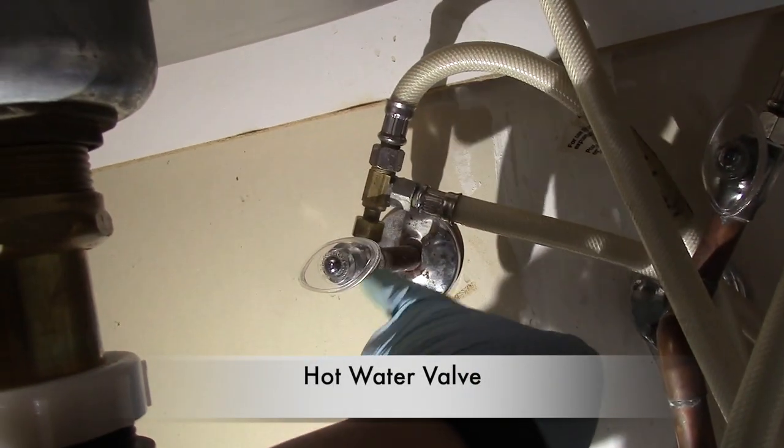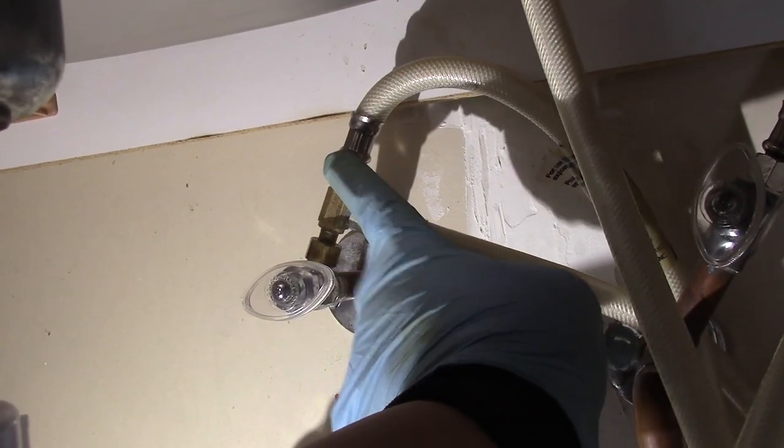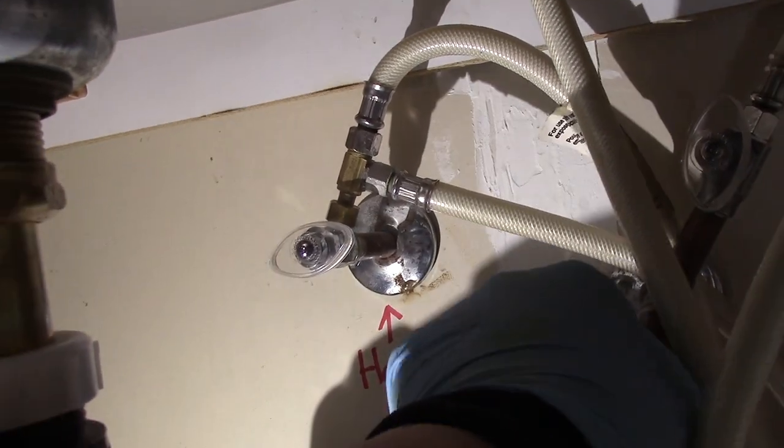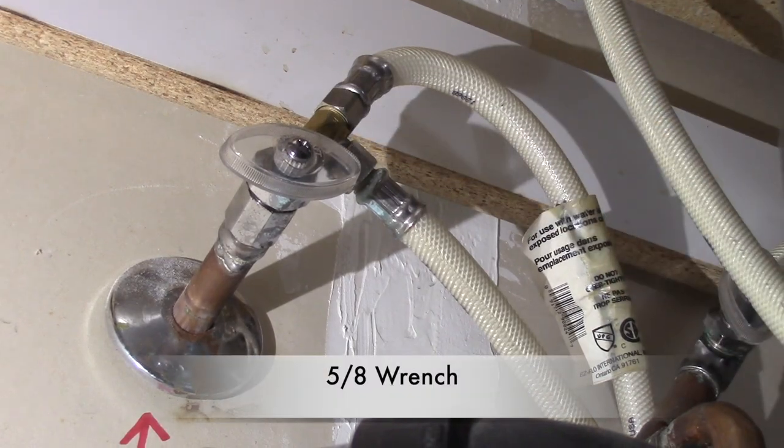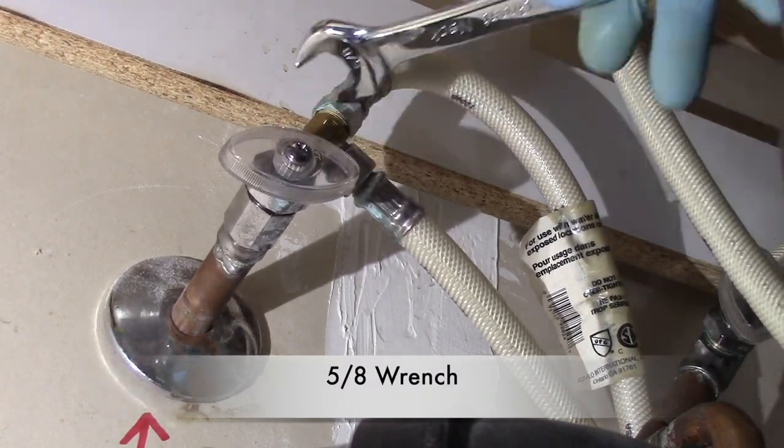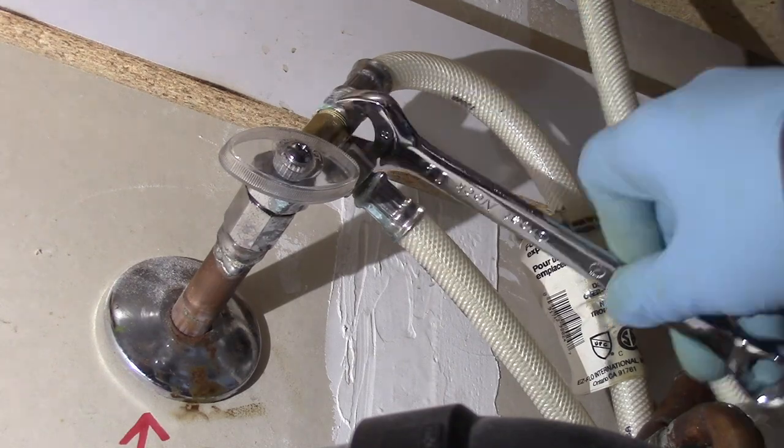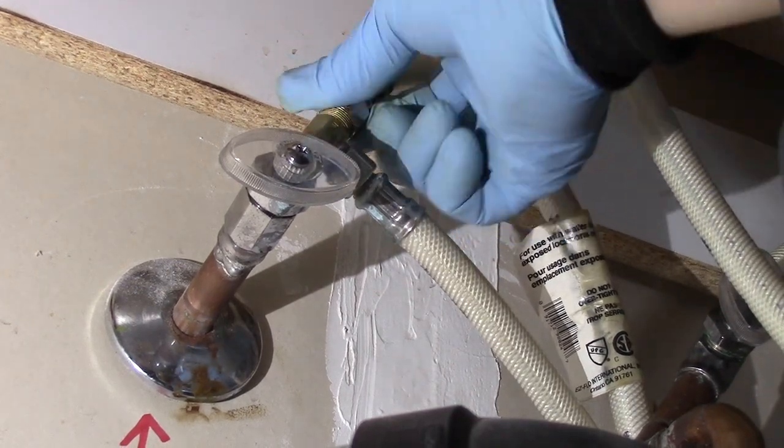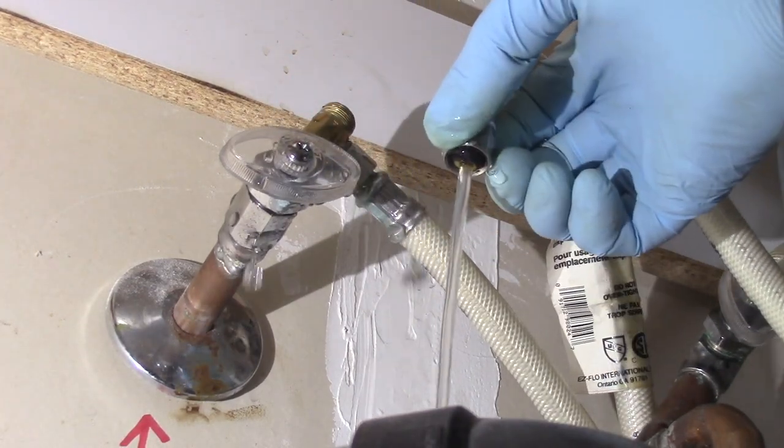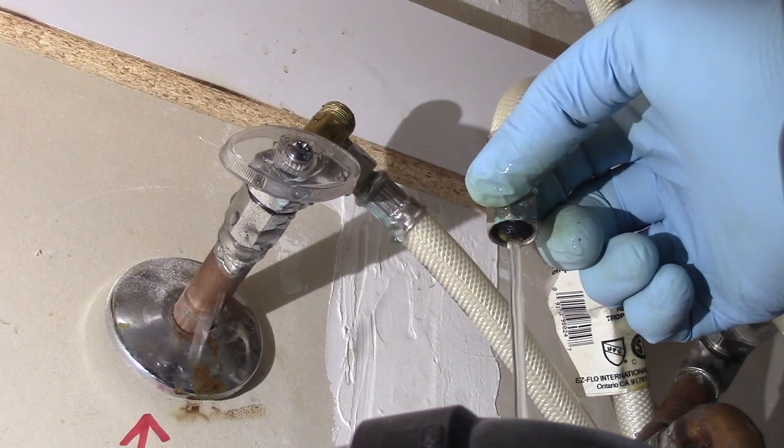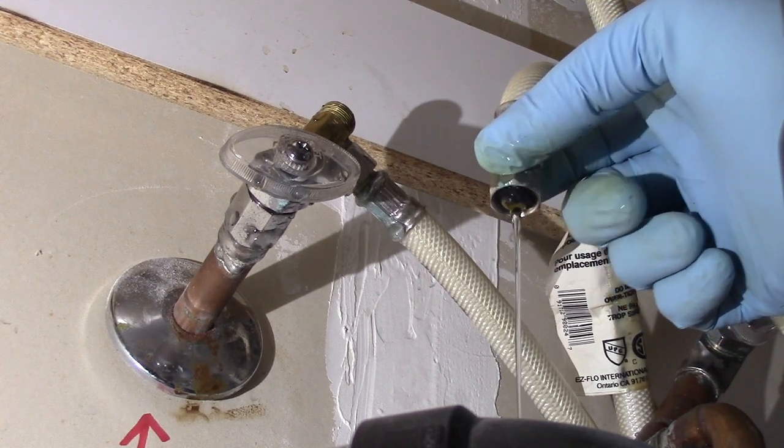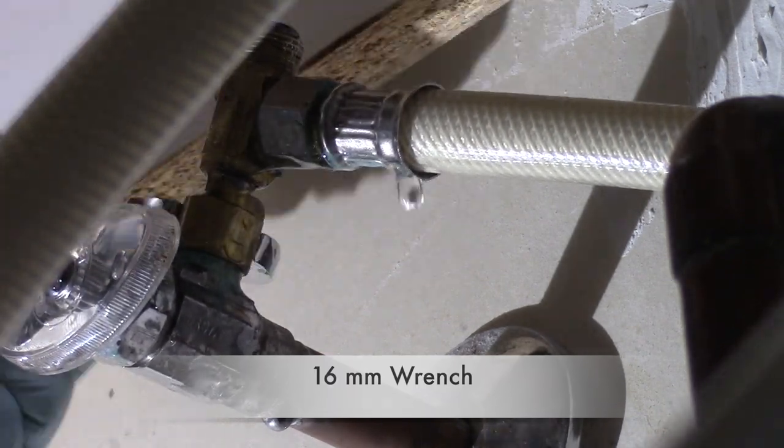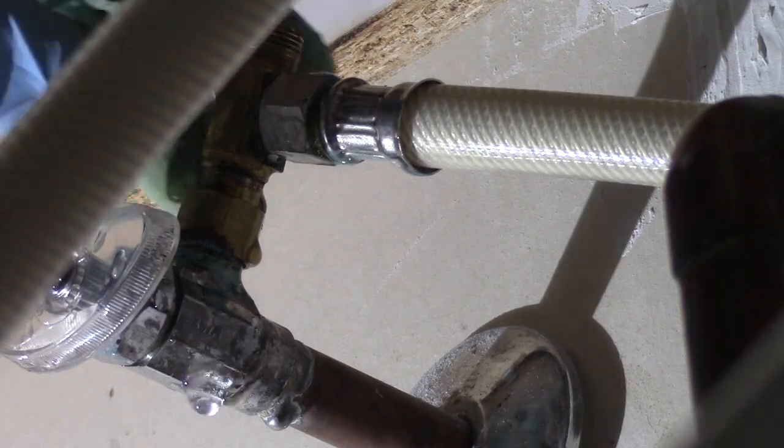Now let's do the hot water shut off valve, same procedure. We undo the top hose and connect it to our shut off valve. We use the 5/8 wrench again to undo the hose, lefty loosey. Then use the 16 millimeter wrench to undo the T connector, lefty loosey.